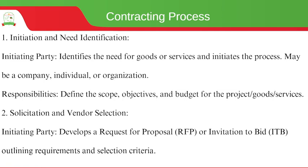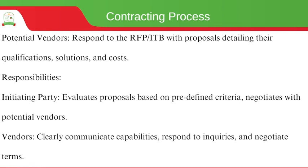We also need to define the scope — to what extent do we need the goods and what are the objectives of that engagement — as well as the budget. After that, we do solicitation and vendor selection, initiating a request for proposal or an invitation to bid that outlines requirements and selection criteria. Potential vendors respond with proposals detailing their qualifications, solutions, and costs.